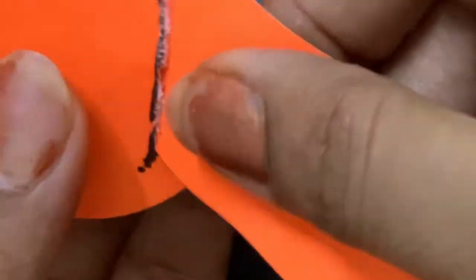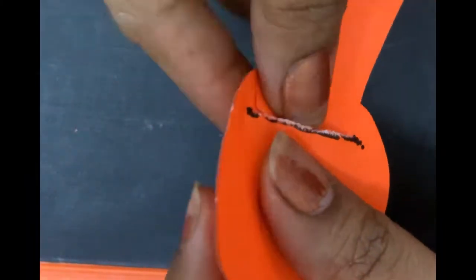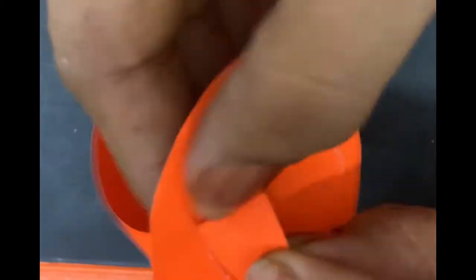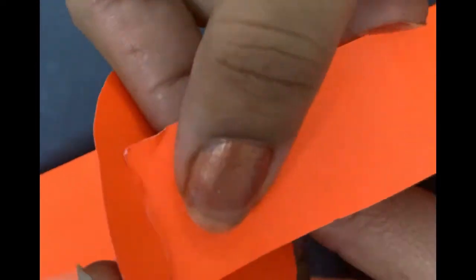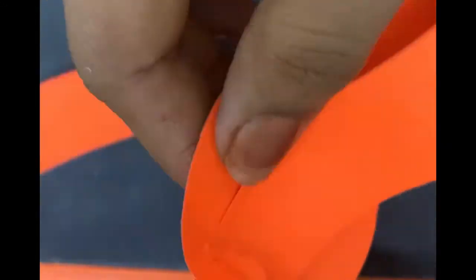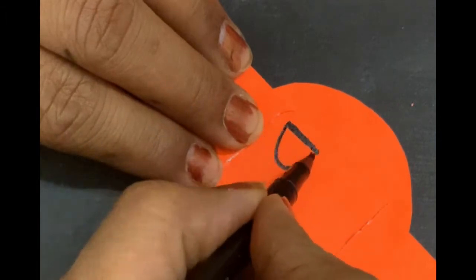Once you insert the strip, it will look like a watch. Now you have to decorate the strip with whatever emotions you want to make.